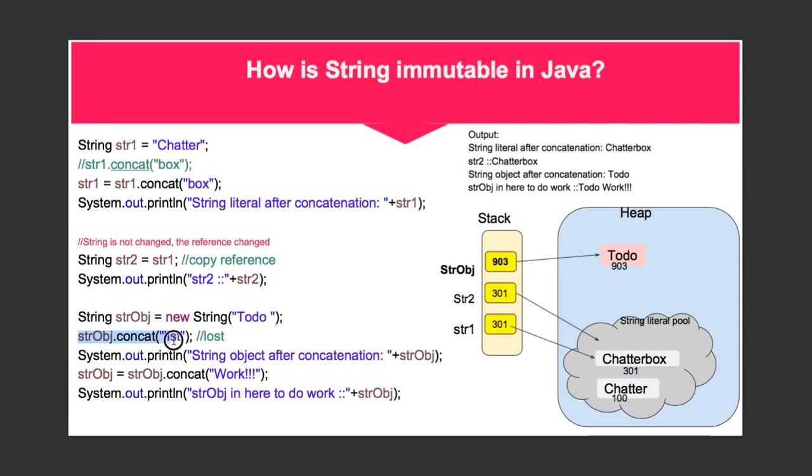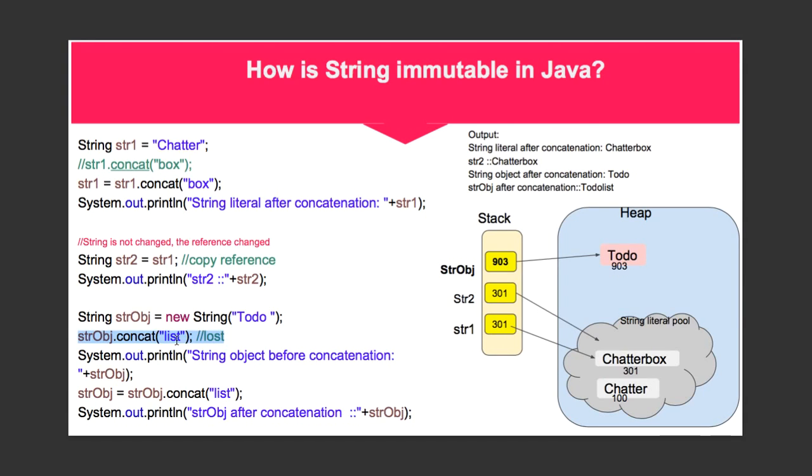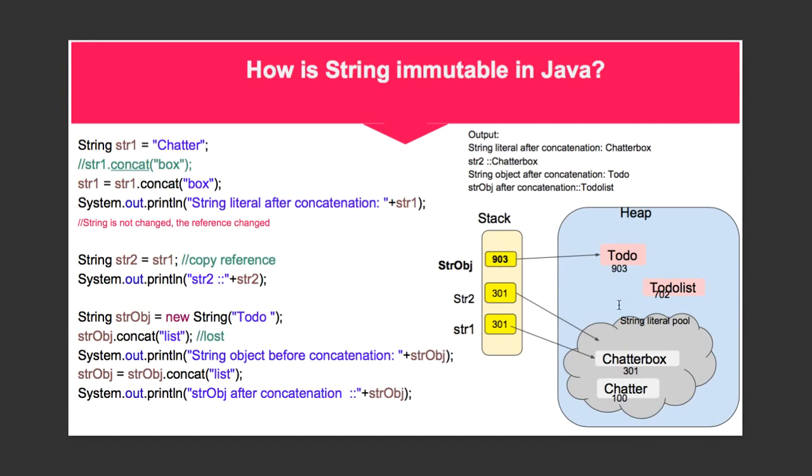So a new object called TodoList will be created on heap outside string literal pool. But because none of the referencing variables is referring to this newly created TodoList, it can be lost.